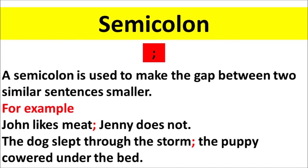Semicolon: a semicolon is used to make the gap between two similar sentences smaller. For example: 'John likes meat; Jenny does not.' 'The dog slept through the storm; the puppy cowered under the bed.'